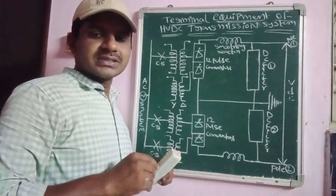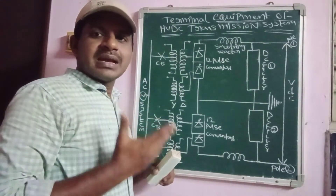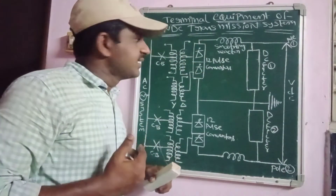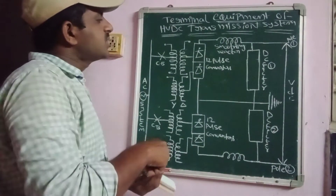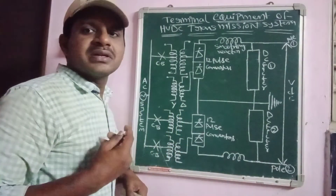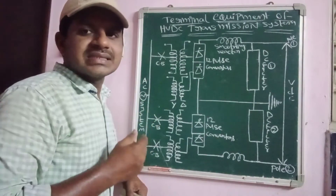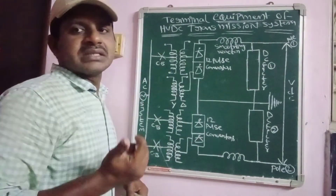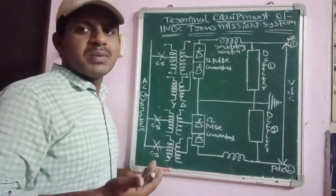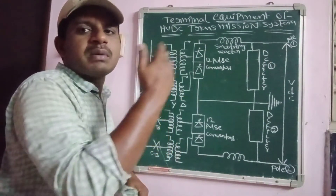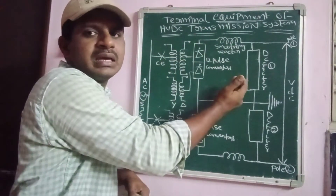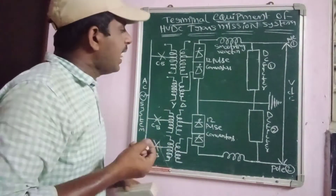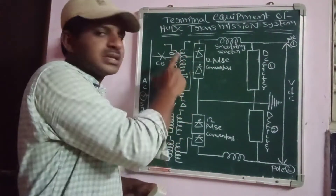Now, let's discuss what terminal equipment the converter stations consist of. There are two types of converter stations: one acts as a rectifier station and the other acts as an inverter station. The total power converts from one form of energy to another — that is, from AC into DC and further DC to AC vice versa.